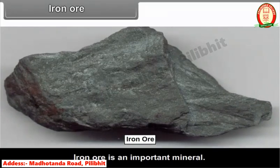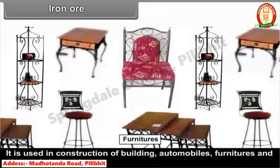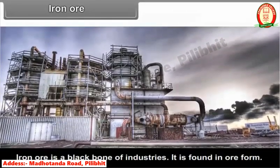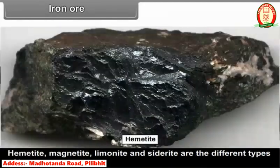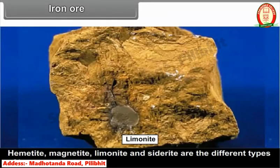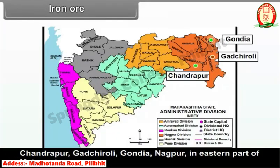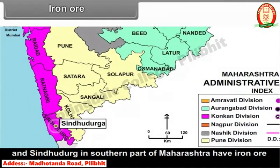Iron ore is an important mineral used in the construction of buildings, automobiles, furniture, and electronic industries — it is the backbone of industry. It is found in ore form. Hematite, magnetite, limonite, and siderite are different types of iron ore. Chandrapur, Gadchiroli, Gondiya, and Nagpur in eastern Maharashtra and Sindhudurg in southern Maharashtra have iron ore deposits.